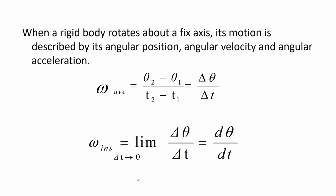Objects moving will have some velocity or velocity counterpart. In this case it is the angular velocity omega. To measure the average angular velocity, it is equal to the change in position theta over time. To determine the angular velocity at an instant we use the instantaneous angular velocity, which is the derivative of theta over the derivative of time. The instantaneous angular velocity is useful when considering a curved path that is changing.